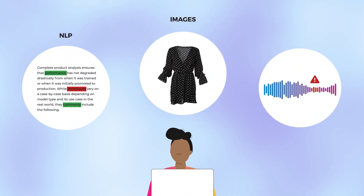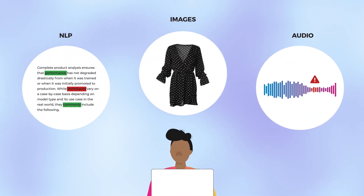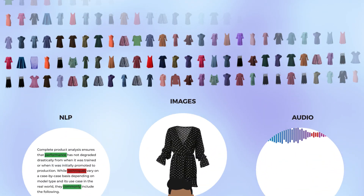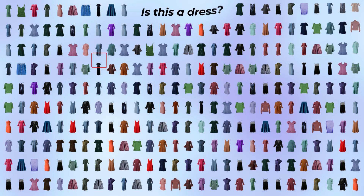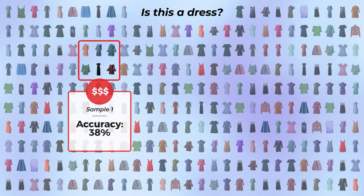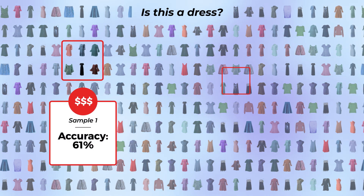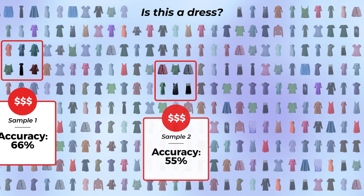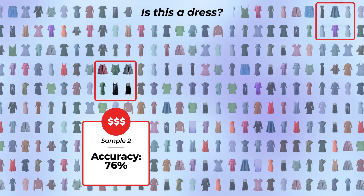Troubleshooting ML models with unstructured data is hard. Labeling is expensive, therefore few samples get chosen, and it's difficult to know which will result in better model performance.